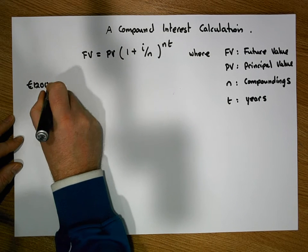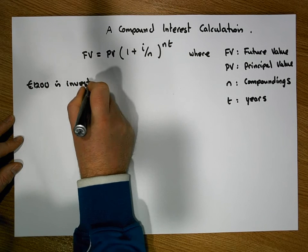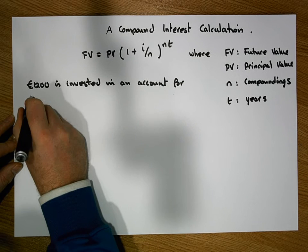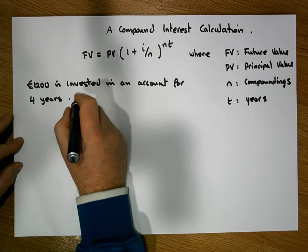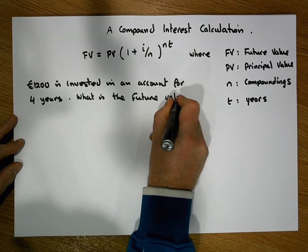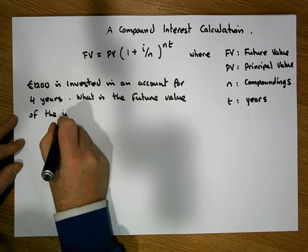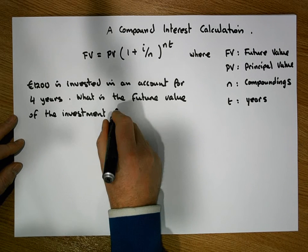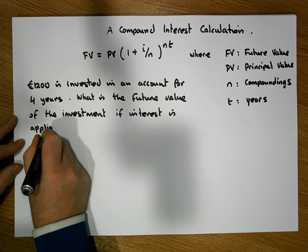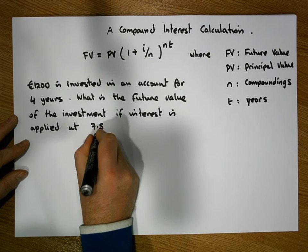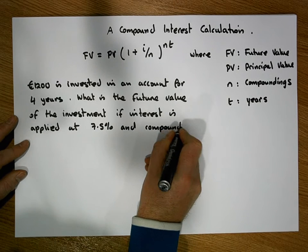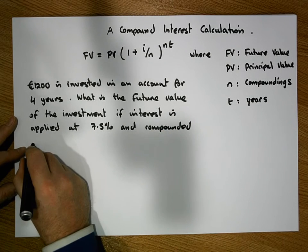Let's look at a particular example. Let's say €1200 is invested in an account for four years. What is the future value of the investment if interest is applied at 7.5% and compounded monthly?